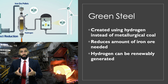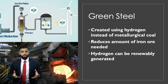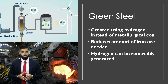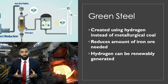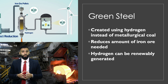Green steel is another alternative construction material, used instead of your usual hot rolled steel. It is created using hydrogen instead of metallurgical coal, which reduces the amount of iron ore needed and cuts down on greenhouse gas emissions. Hydrogen can also be renewably generated via electrolysis, which involves passing an electric current through water to split the water molecule into hydrogen and oxygen. This process can be powered by natural resources such as wind and solar power.